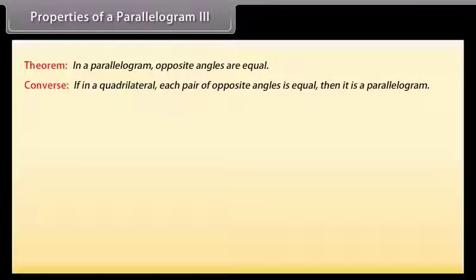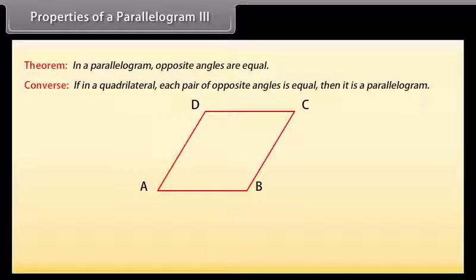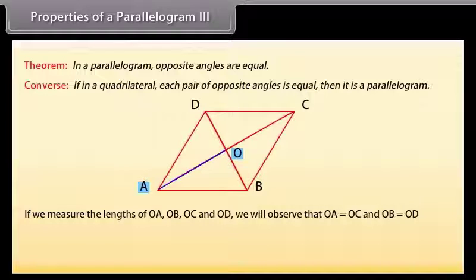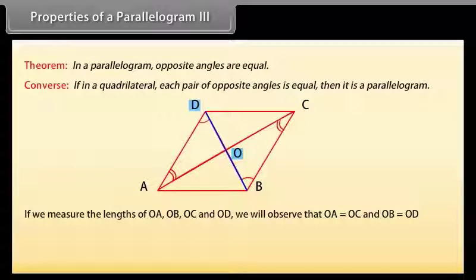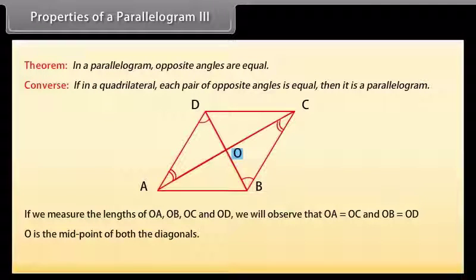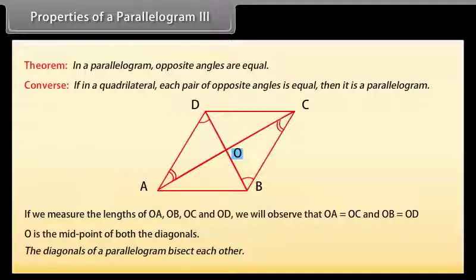Now let us find one more property. Draw a parallelogram ABCD and draw both its diagonals intersecting at point O. If we measure OA, OB, OC, and OD we observe that OA = OC and OB = OD. That is, O is the midpoint of both diagonals. If we repeat this activity with more parallelograms, we find the same result. This gives us a new theorem: the diagonals of a parallelogram bisect each other.